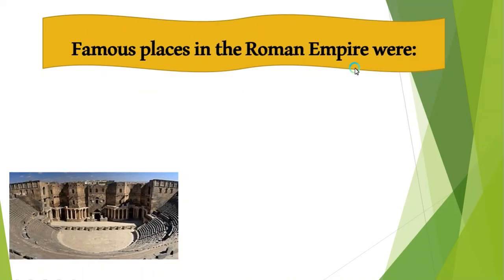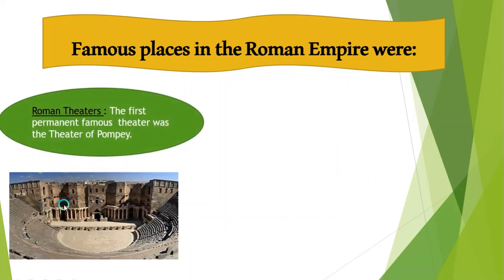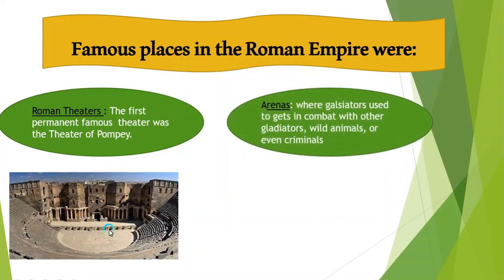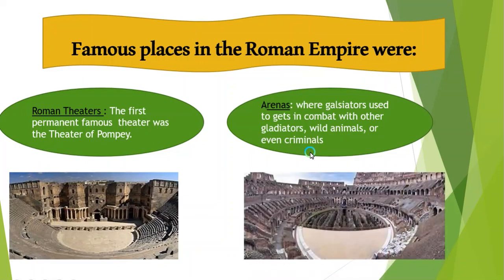Now let's look at the famous places of the Roman Empire. The first picture shows the Roman theater — the first permanent famous theater was the Theater of Pompeii, as we can see here. It is surrounded by seats and is a very large place. Next is the arena, where gladiators would compete against other gladiators, wild animals, or even criminals. This is the arena, and this one is the Roman theater.